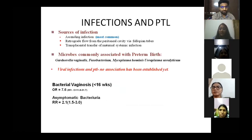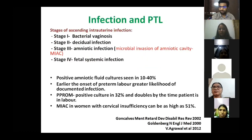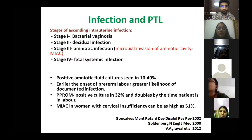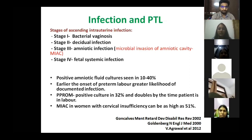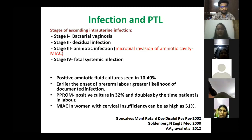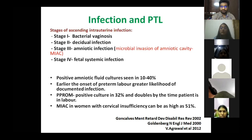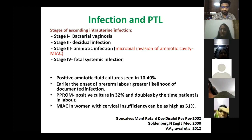Viral infections have no proven association with preterm labor. In infection progression: vaginal infection leads to decidual involvement, then amniotic sac, and finally fetal systemic infection. Stage three — amniotic infection — is called microbial invasion of the amniotic cavity, abbreviated as MIAC, which is frequently asked in exams and viva.